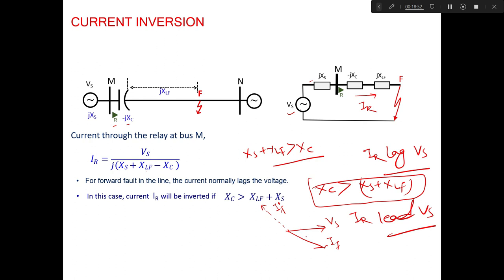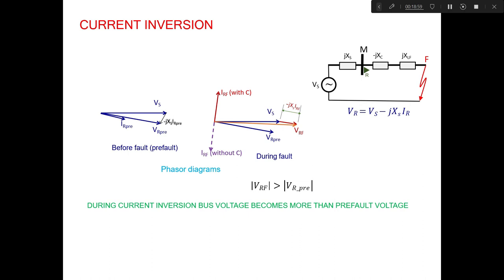When current inversion occurs, the relay sees a forward fault but declares it as a reverse fault, causing serious protection problems. During current inversion, the bus voltage VRF becomes greater than the pre-fault voltage VR, meaning the bus voltage becomes more than the pre-fault voltage during the inversion condition.